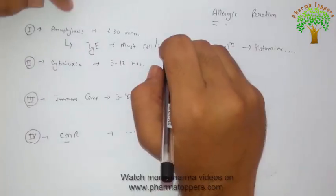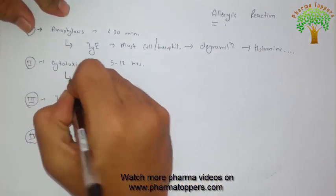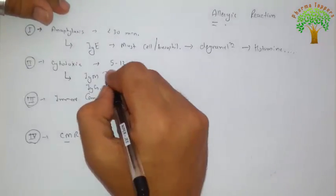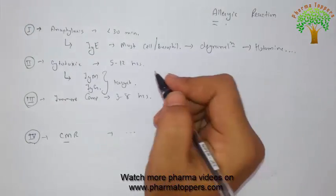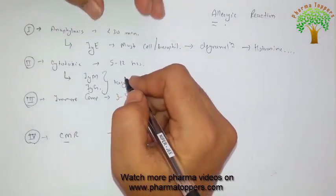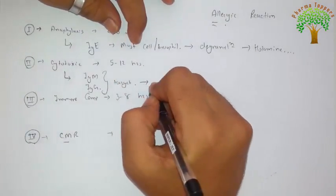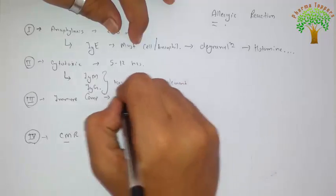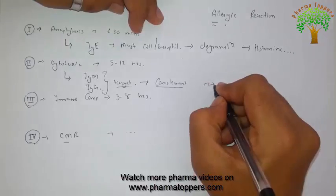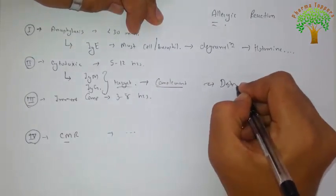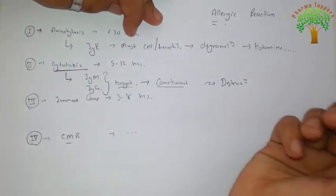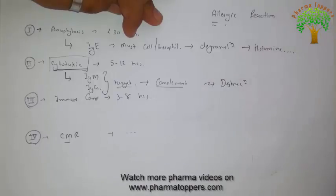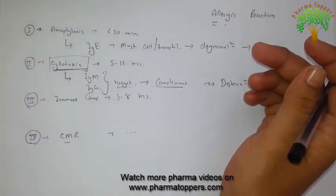Next is the cytotoxic type. In this case, an antigen is formed for some reason, and generally IgM and IgG are involved. These two bind to the target cell. Unlike anaphylaxis, degranulation does not take place here. Instead, by binding to the target cell and recognition by the complement, the complement targets this complex and causes complete destruction of the target cell — hence it is termed the cytotoxic type. An example of this is a reaction that may occur during blood transfusion.